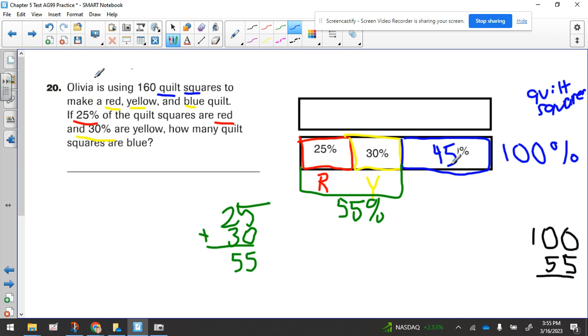Now, if we look at the number that they give you, Olivia is using 160 quilt squares to make a red, yellow, and blue quilt. So is this number the number of red squares? Is it the number of yellow squares? Or is it the number of blue squares? Or is it something else? It's something else. It's the all of it number. So let's put that number over here.